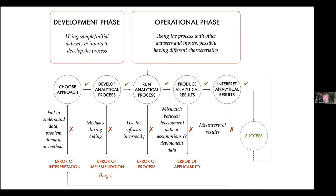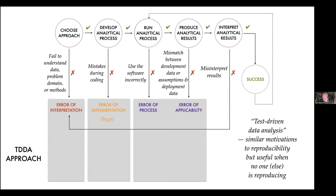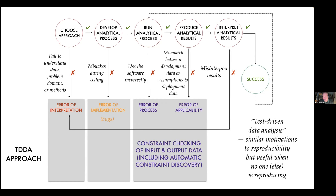In TDDA — a Python open source library that I maintain, and also a set of ideas — we've tried to tackle most of these areas. For errors of process and applicability, we've developed tools using constraints to check input and output data, and to discover suitable constraints from example data. We've also developed extensions to standard testing libraries that make testing easier when you have complex outputs typical in data science, where results aren't necessarily identical every time due to version embedding, date stamps, or deserialization order.